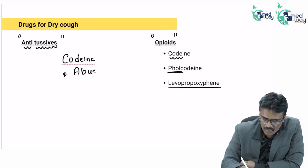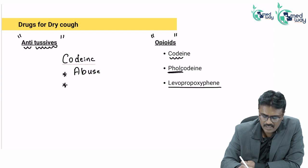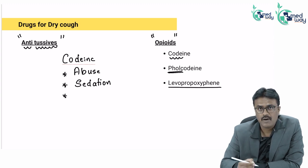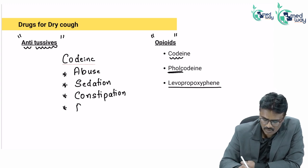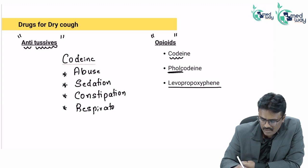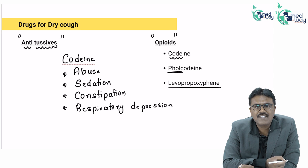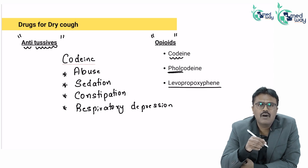Since codeine becomes morphine, the first problem is that patients may start abusing the drug because it causes euphoria. The second drawback is sedation. Third, if used for a very long period, it can produce constipation. At overdose, the drug can cause respiratory depression — breathing becomes difficult. Because of these four drawbacks, codeine should not be used in children.